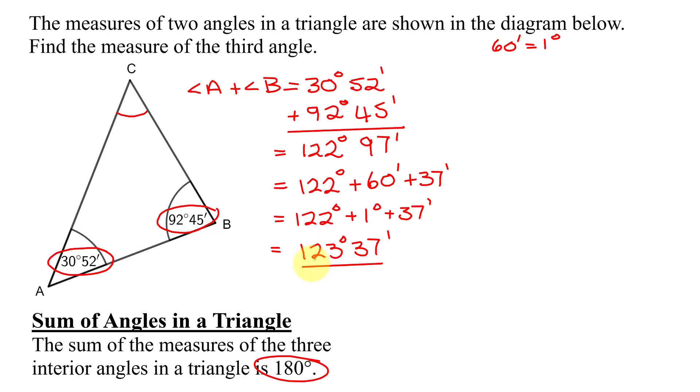Now, I'm going to have to subtract this sum from 180 degrees. So, angle C is just 180 degrees minus the sum I just found of 123 degrees, 37 minutes. Now, you can see I'm going to run into a problem. I cannot subtract 37 minutes from no minutes.